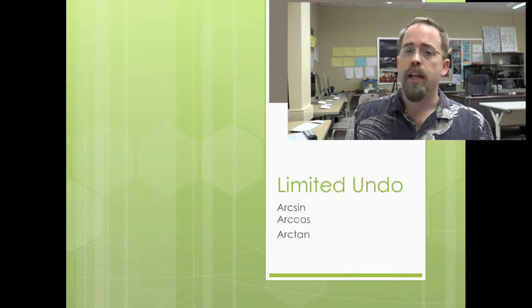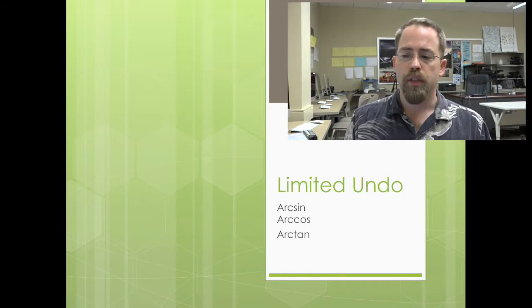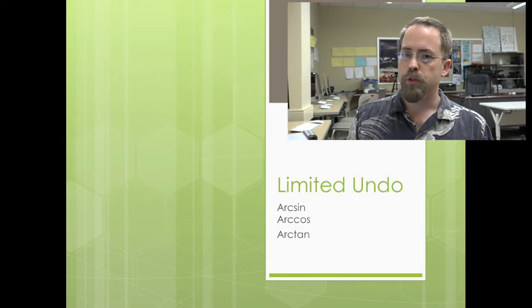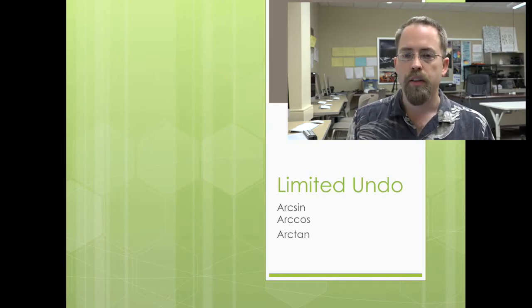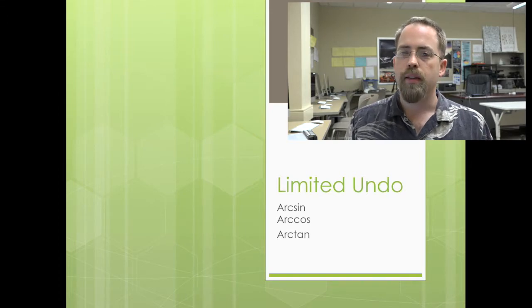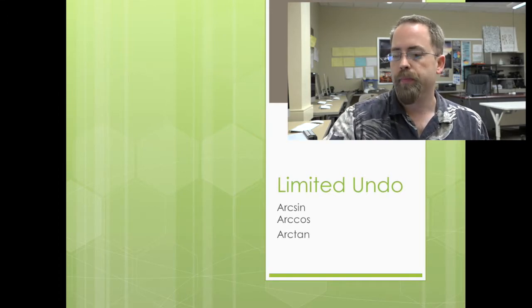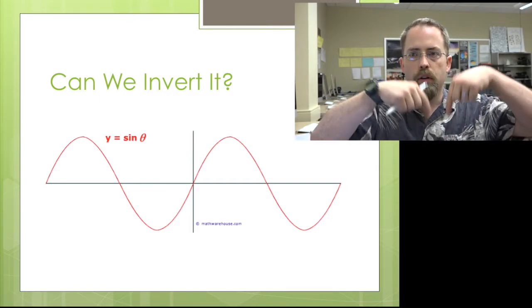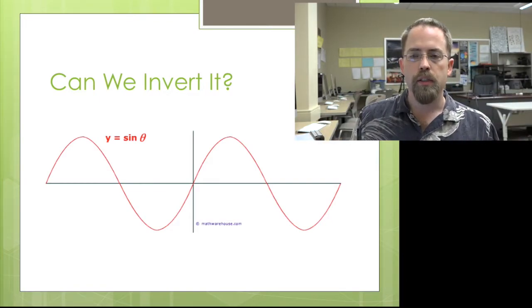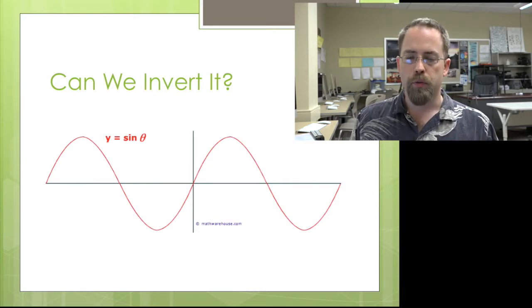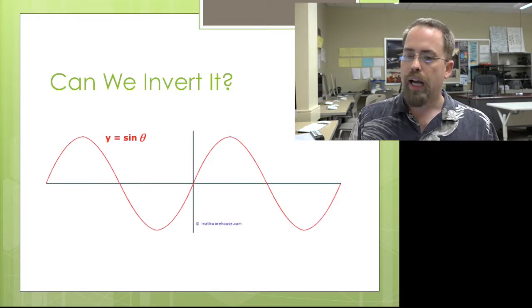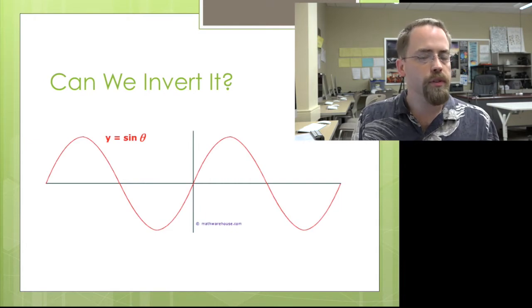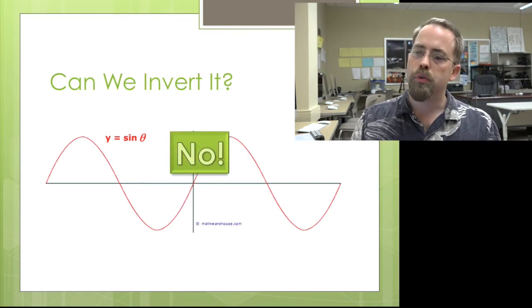And it turns out the same thing is true with sine, cosine, and tangent. If you try to make the undo, the arc sine, the arc cosine, and the arc tangent, it's not going to be the same as the original. If you look at a graph here of a sine wave, you can see it's definitely going to fail the horizontal line test. It's not something that's going to be invertible. So how can we make inverse sine? How can we make something that is the undo of sine?